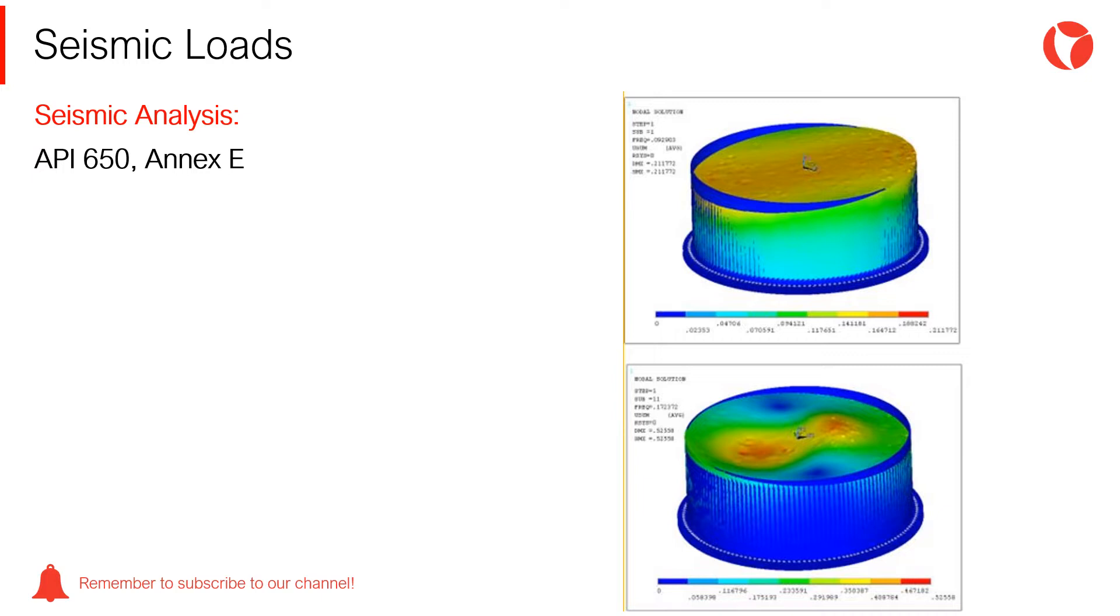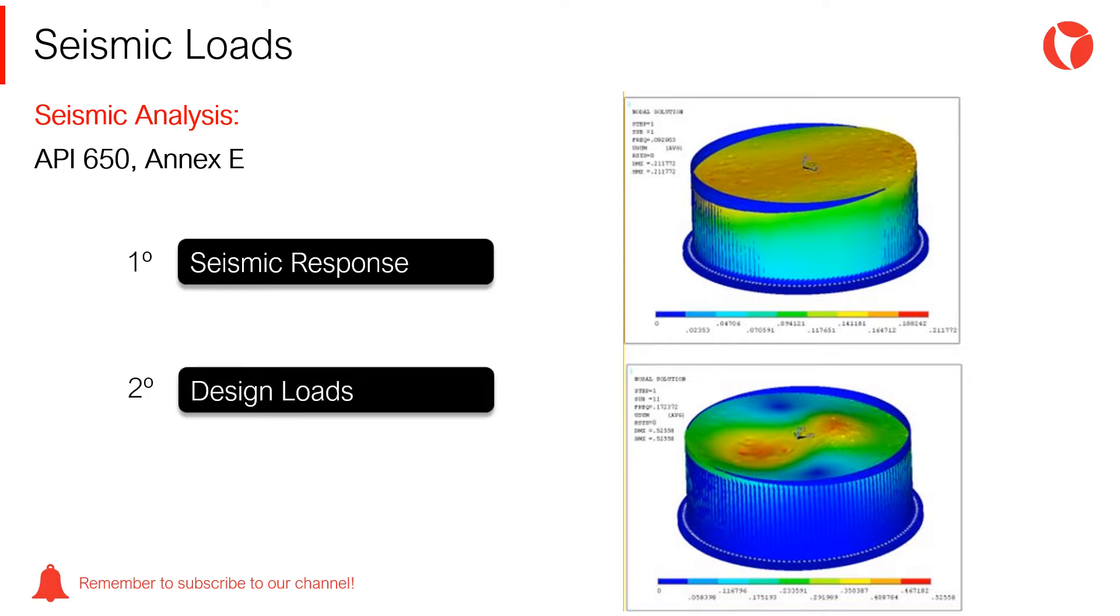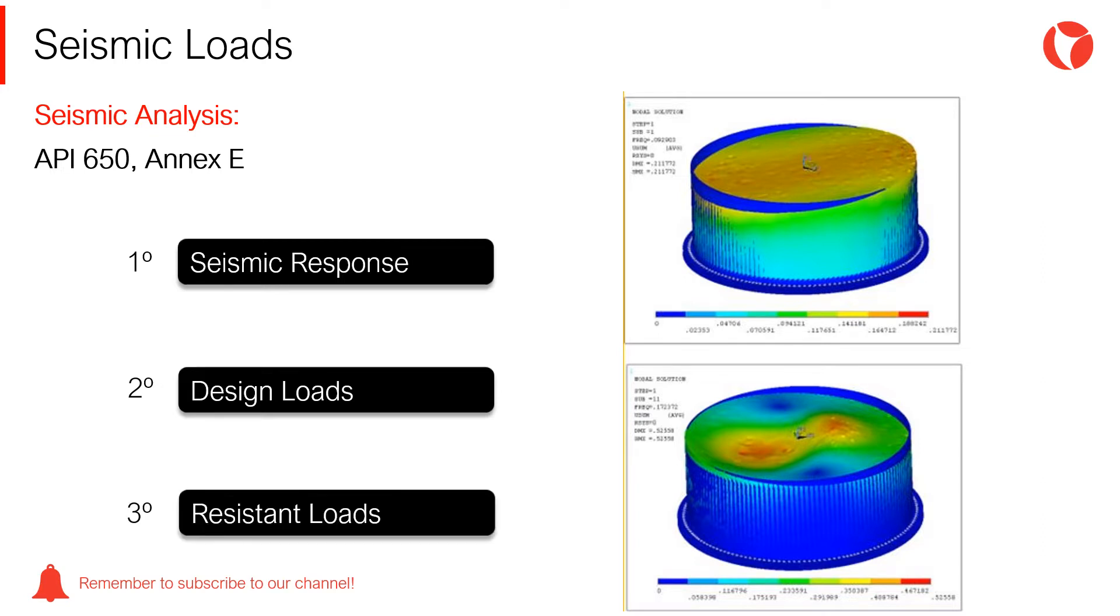To determine if the tank is stable against a seismic event, Annex E of the API 650 code must be applied. Steps are the following: first, we calculate the seismic response, this is spectral acceleration. Second, we obtain the design loads. And third, we calculate the loads resisting the seismic event.